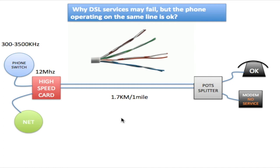What happens is that with alternating current, the capacitor charges, and when the alternating current changes polarity, that capacitor discharges. The same thing happens here: when the signal is applied to the line, one side charges positive and the other negative, then when the alternating current changes polarity it discharges into the phone. When polarity changes again, it charges in the opposite direction and discharges toward the phone as well.